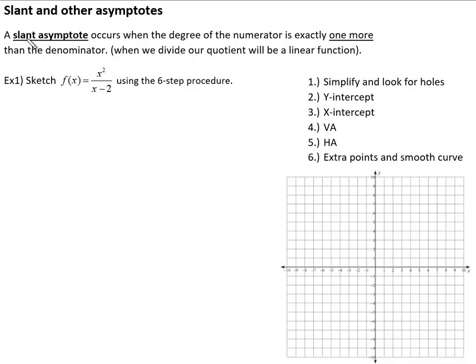Alright, so now we're going to talk about slant and other asymptotes. More specifically slant asymptotes. A slant asymptote occurs when the degree of the numerator is exactly one more than the denominator. In other words, if we do polynomial division, x squared divided by x to the first will result in something x to the first, some sort of linear function. That's going to be the asymptote that our graph is going to be bounded by.